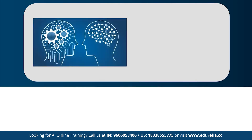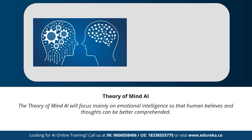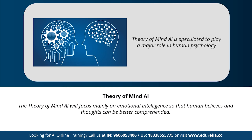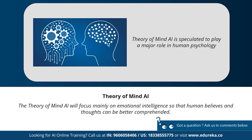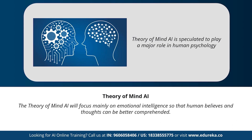Next is the theory of mind AI, a more advanced type of artificial intelligence. This category is speculated to play a very important role in psychology. This type of AI will mainly focus on emotional intelligence so that human beliefs and thoughts can be better comprehended. The theory of mind AI has not been fully developed yet, but rigorous research is happening in this area.